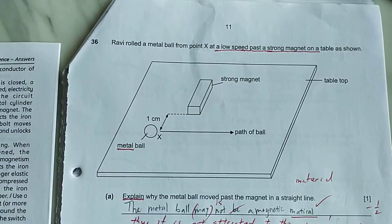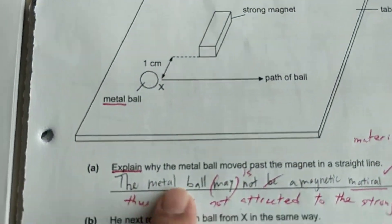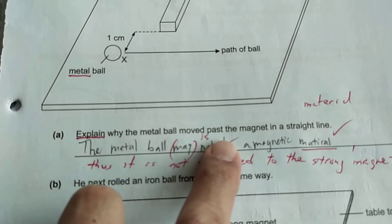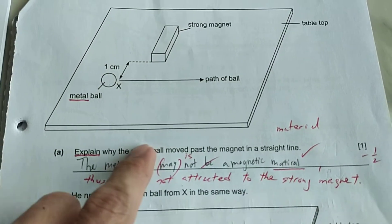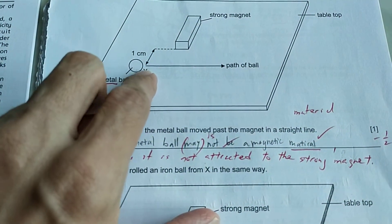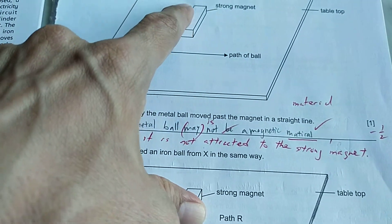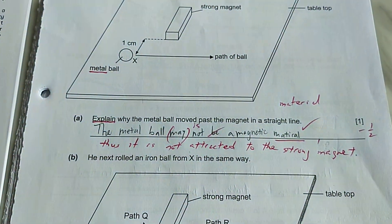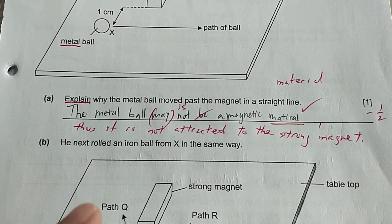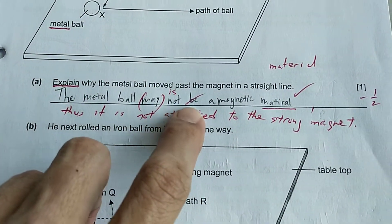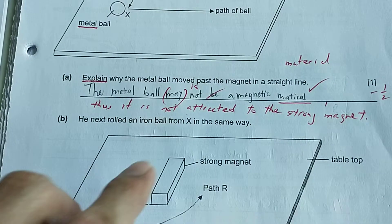Part (a) asks: explain why the metal ball moved past the magnet in a straight line. So the student has to explain why this metal ball continually moves in a straight path past this strong magnet. Look at this student's answer. The student answer says the metal ball may not be a magnetic material.